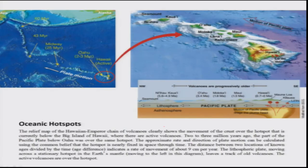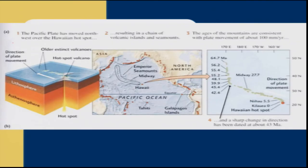There was also a change in the plate motion direction. When the plate moved over the active magma chamber, at some point it changed direction — it used to move northwest but then changed to almost north-northwest. This is one of the best examples showing how we can determine plate motions. A sharp change in direction occurred at around 43 million years ago in this region.